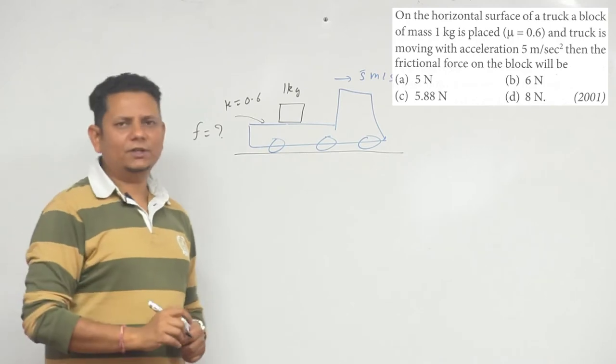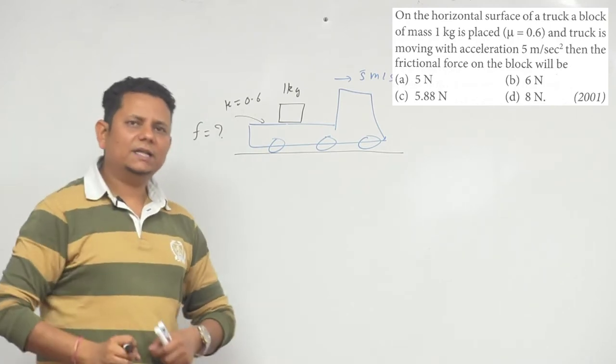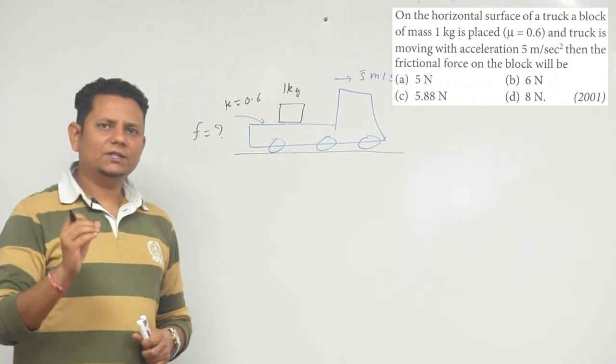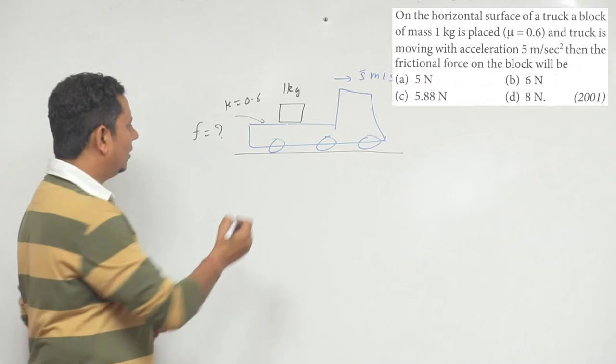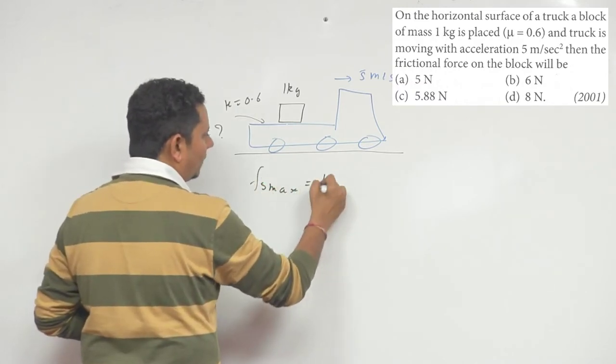Whenever we solve friction problems, we always discuss in class that the first step should be to find the maximum friction value. What will be the limiting value of static friction? So here fs max, we write that, that will be equal to μN.